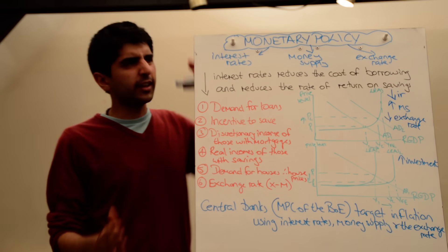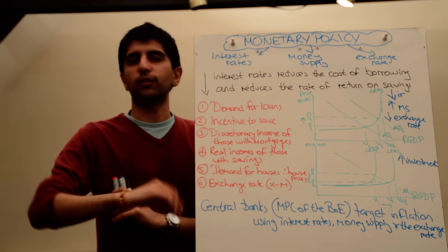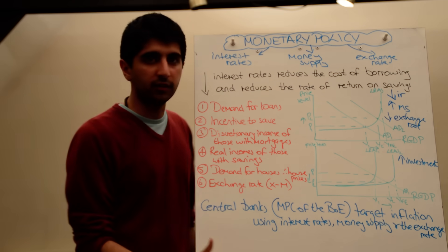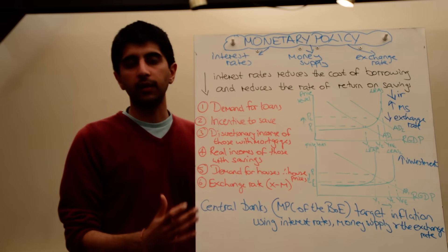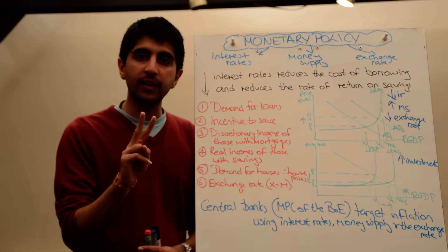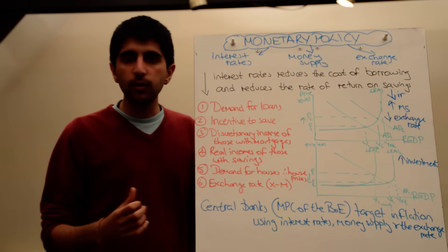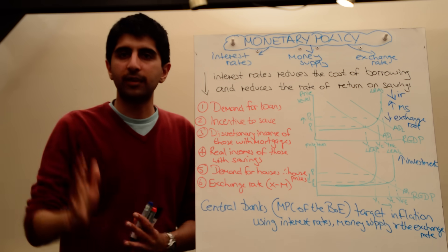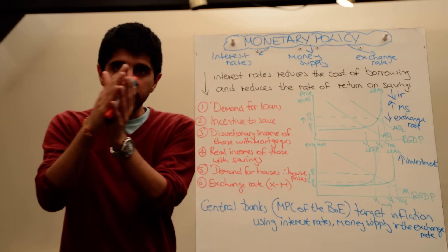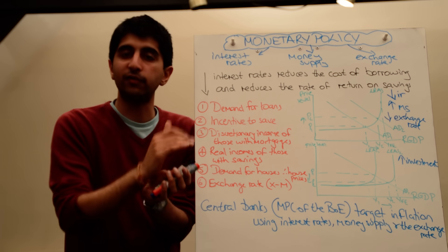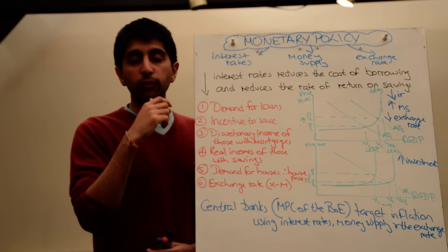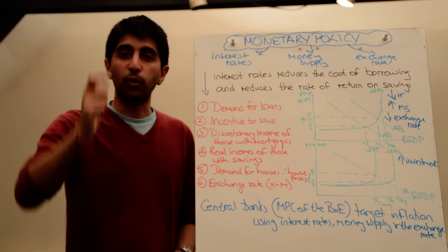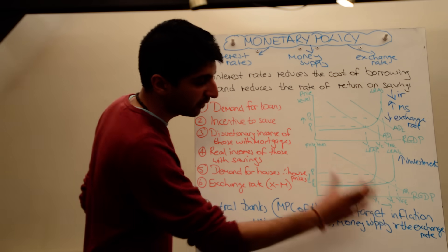They don't decide arbitrarily — they actually target inflation when they set interest rates. In the UK, the target rate of inflation is 2%. What the Monetary Policy Committee does is: when inflation is getting out of control, maybe rising to 5%, they can increase interest rates to reduce aggregate demand and reduce inflation. And if inflation is too low, they can reduce interest rates, increase aggregate demand, and cause more inflation to bring it back to target. So they target inflation.